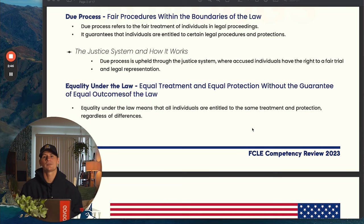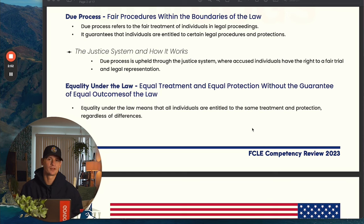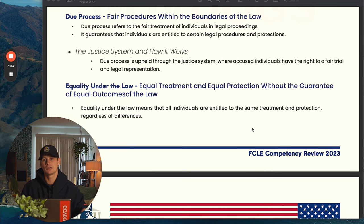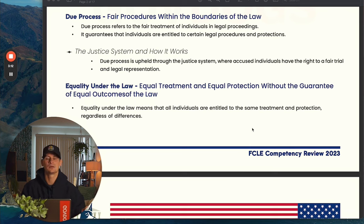Due process is the idea that the government cannot take away your rights without following certain processes. You'll see this a lot in the Fifth Amendment. So if the government wants to put you in jail or limit your rights in any capacity, they need to follow due process. If due process isn't followed during a criminal case, the person being accused has the ability to basically be let off because the government didn't do what they needed to do. Due process protects the rights of the accused so that they're not thrown in jail without sufficient evidence and the proper process being followed.